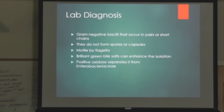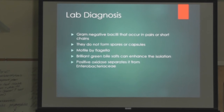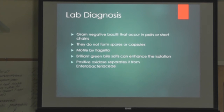Plesiomonas has no spores or capsules and is motile by flagella. It will not grow on TCBS — that was the one for Vibrios. However, it will actually grow on CIN agar, which is specific for Yersinia, which is kind of bizarre. We actually have samples of CIN — they basically look like TSA plates.